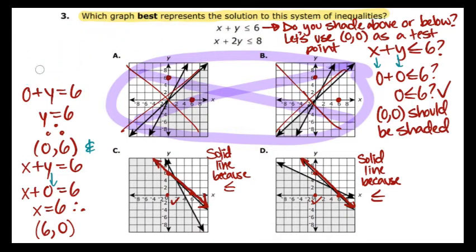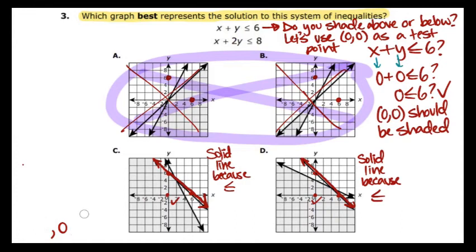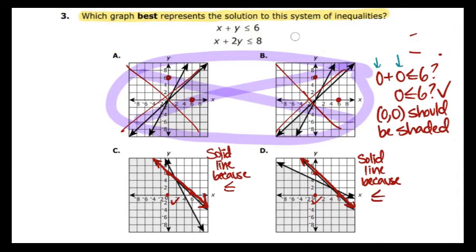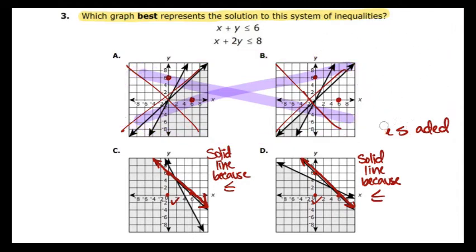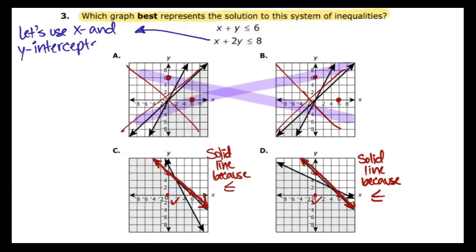We're going to work on the next equation. The next equation is x plus 2y is less than or equal to the number 8, which means it should also be a solid line. How are we going to tackle the second one? We're going to do the same thing. We're going to use your x and y intercepts. Remember, these are the easiest ways to do it. Even if you get decimals, you can pretty much figure it out.